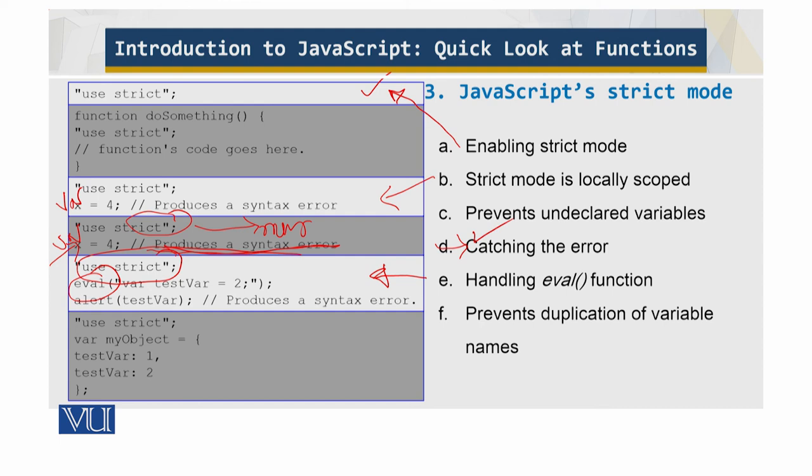Strict mode also prevents duplication of variable names within an object function call over here. You see that you have this over here. This is duplicate. So this is all I have for this module. We'll see you in the next video.